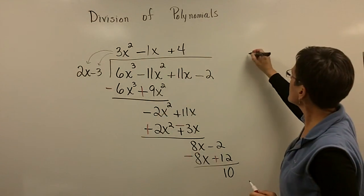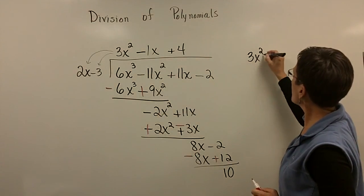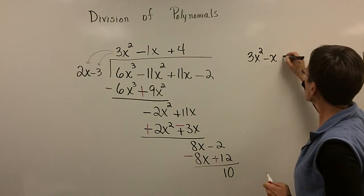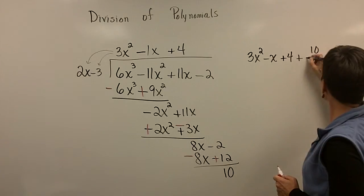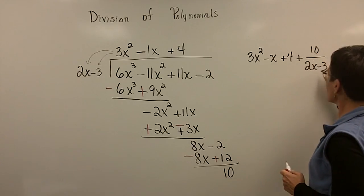My answer is 3x squared minus 1x. I'm just going to put minus x plus 4. And then the divisor is, I'm sorry, the remainder is 10 over the divisor.